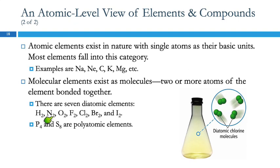And these are hydrogen, nitrogen, oxygen, fluorine, chlorine, bromine, and iodine. There are others, like P4 and S8. These are polyatomic because they have many atoms in them, and you are not required to know those.